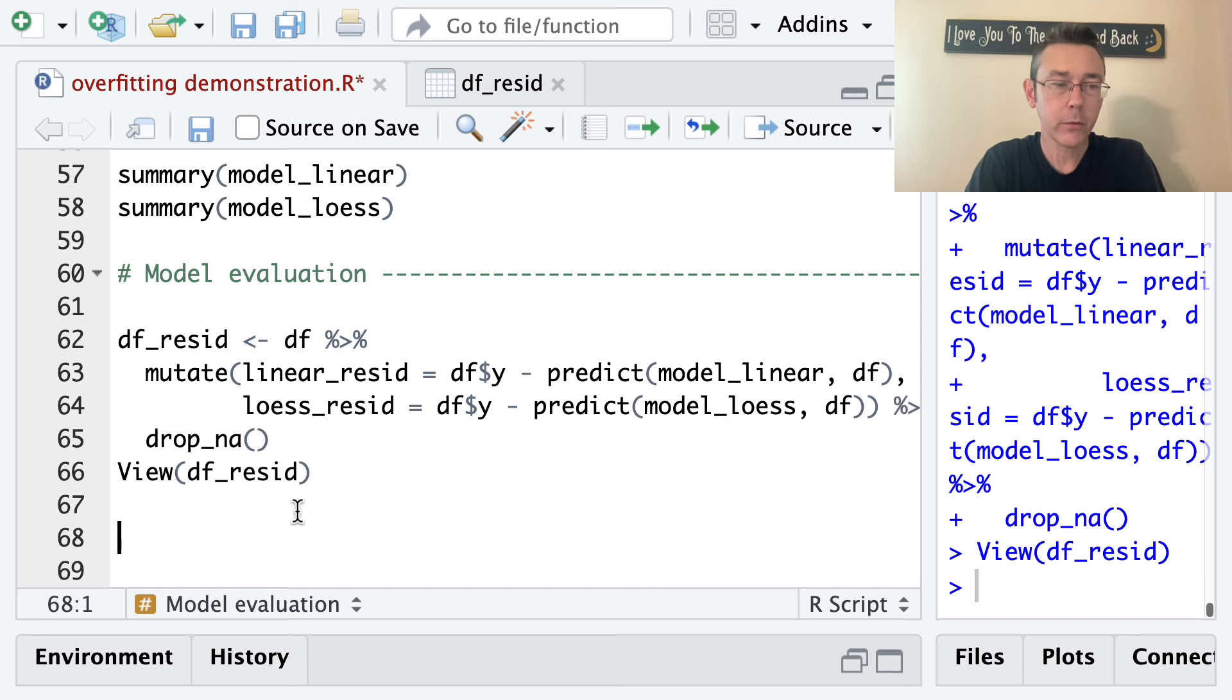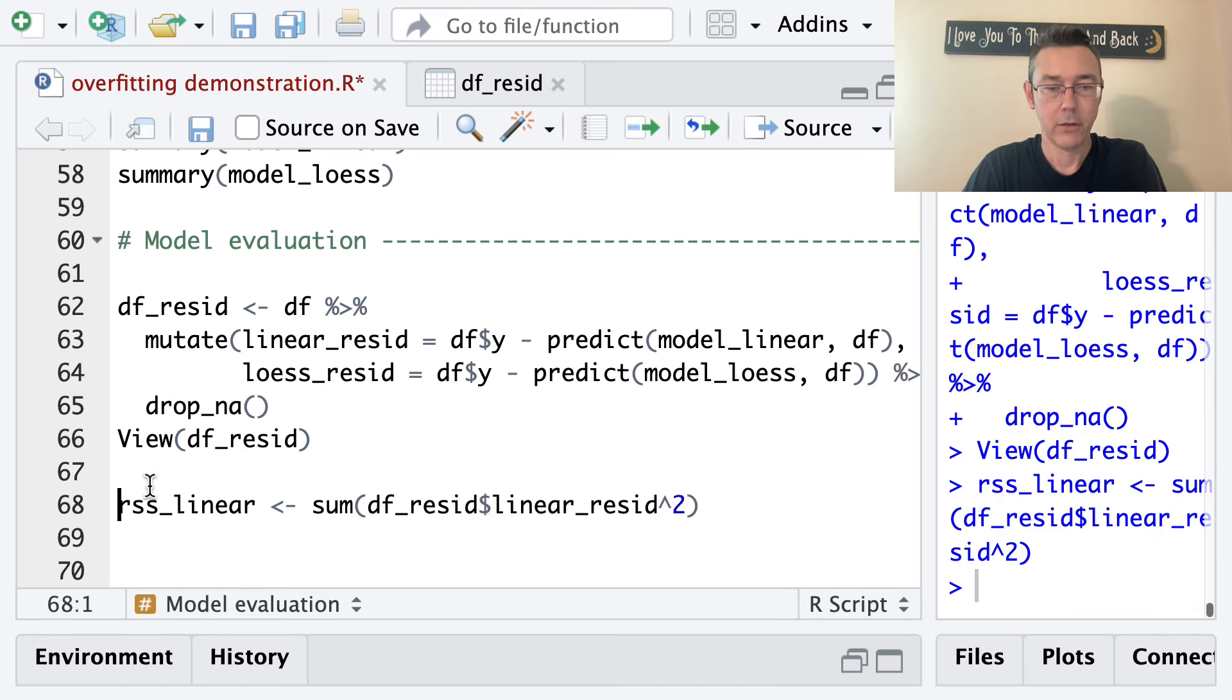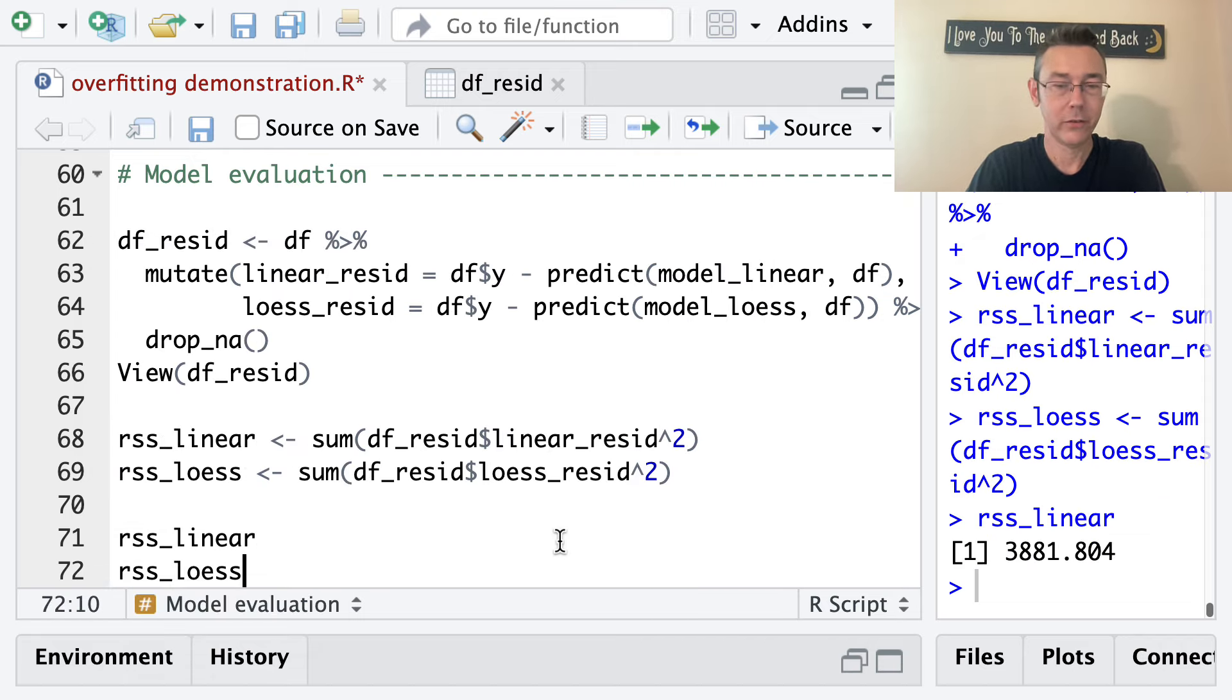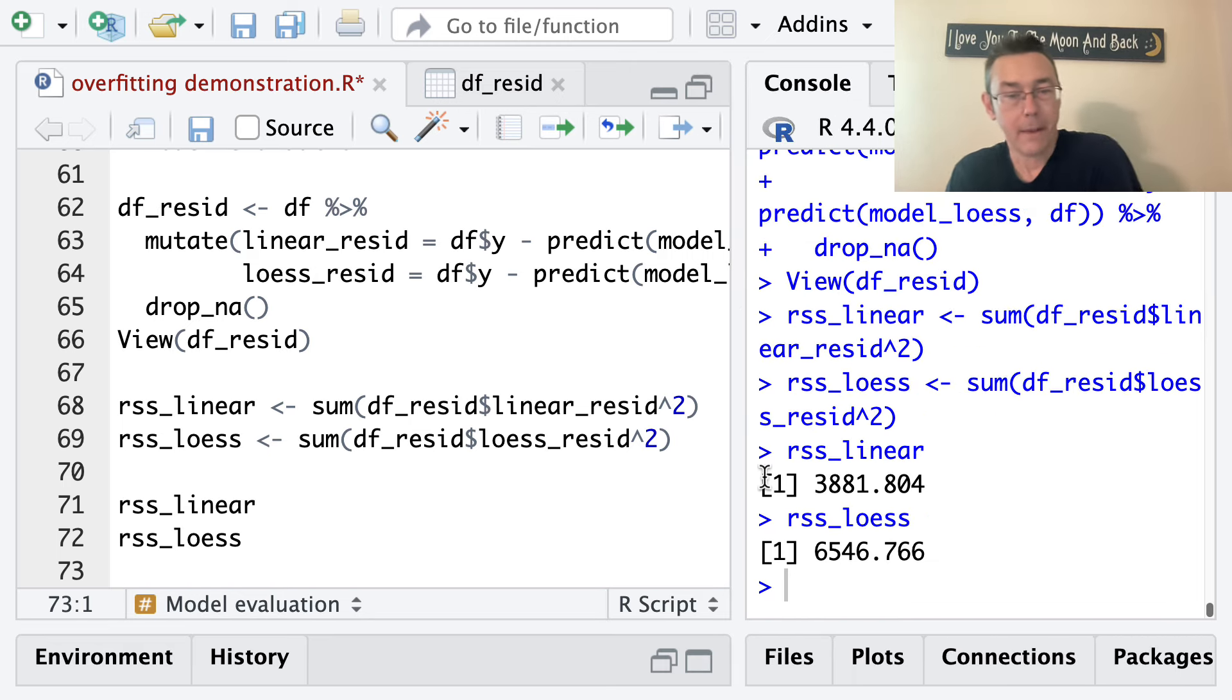Okay, so let's get a residual sum of squares for the linear model on this population data. And so what I'm going to do is I'm going to take the sum of df_resid$linear_resid, and I'll square all that and then I'll copy and paste that and do the same thing for loess. So loess_resid. And then I just want to take a look at both of those. Let's do RSS_linear and RSS_loess. And I'll adjust my pane a little bit here. Okay, so what's going on here is we're saying, how is the model performing on the population data? What is the overall sum of squares error for the linear model? And what is the overall sum of squares error for the loess model?